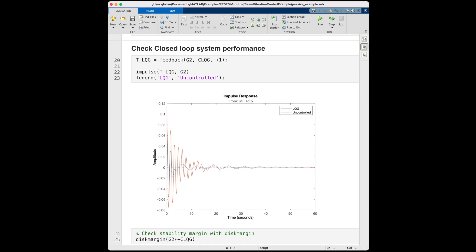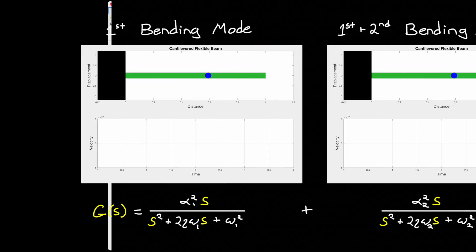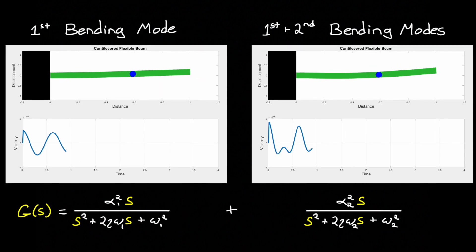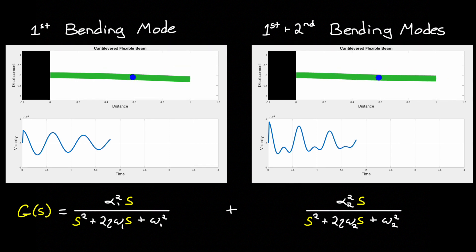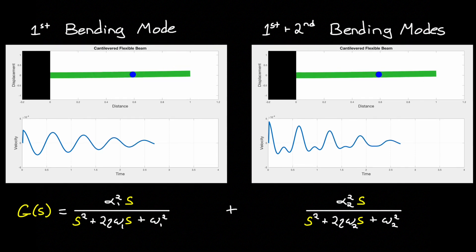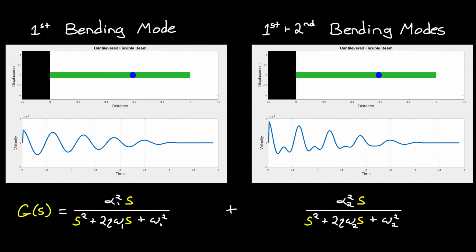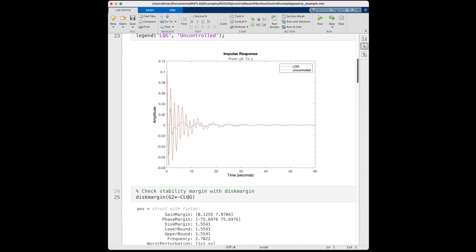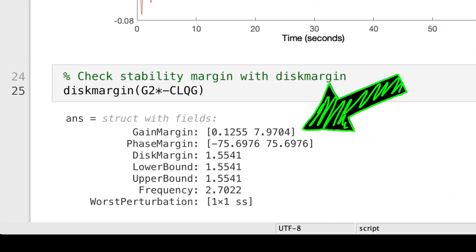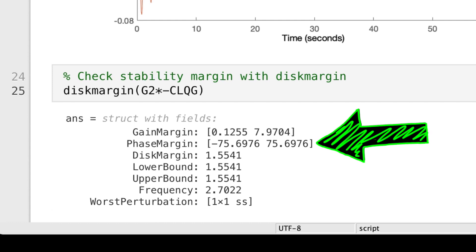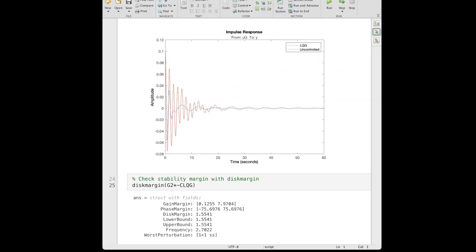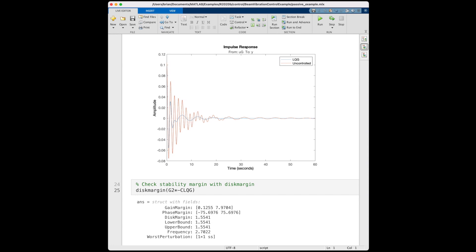We could play around with the cost function and the measurement and process noises if we want to tune this response, but that's not where I want to take this video. I want to look at how much stability margin we have in this design. We know that our model of the flexible beam is not perfect, it's just the first two modes. Therefore to give us confidence that this controller won't create an instability on the real beam, we should have adequate stability margin in the design. We can check for that by looking at the disk margin.